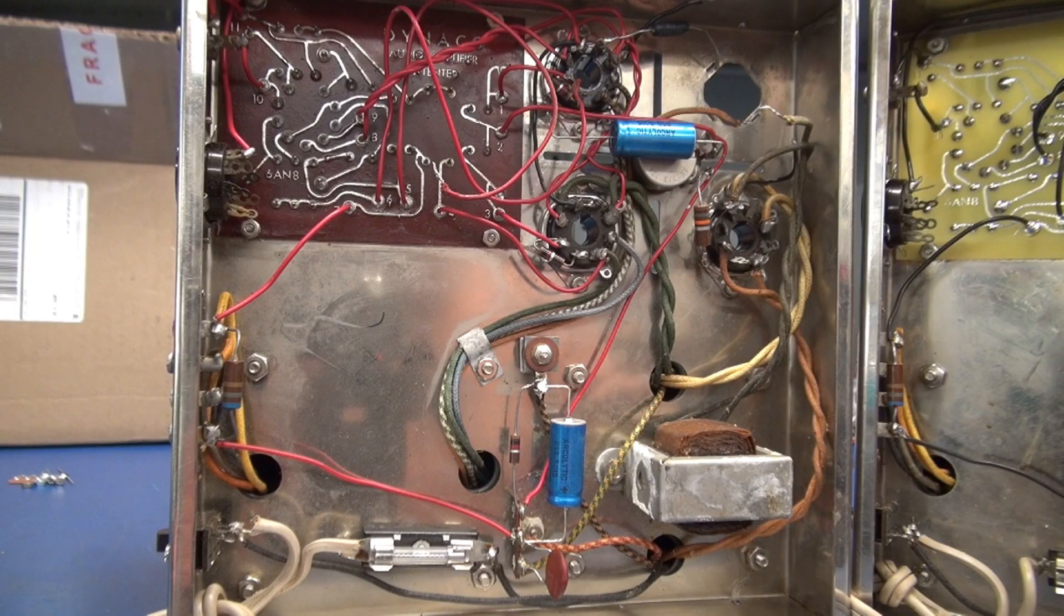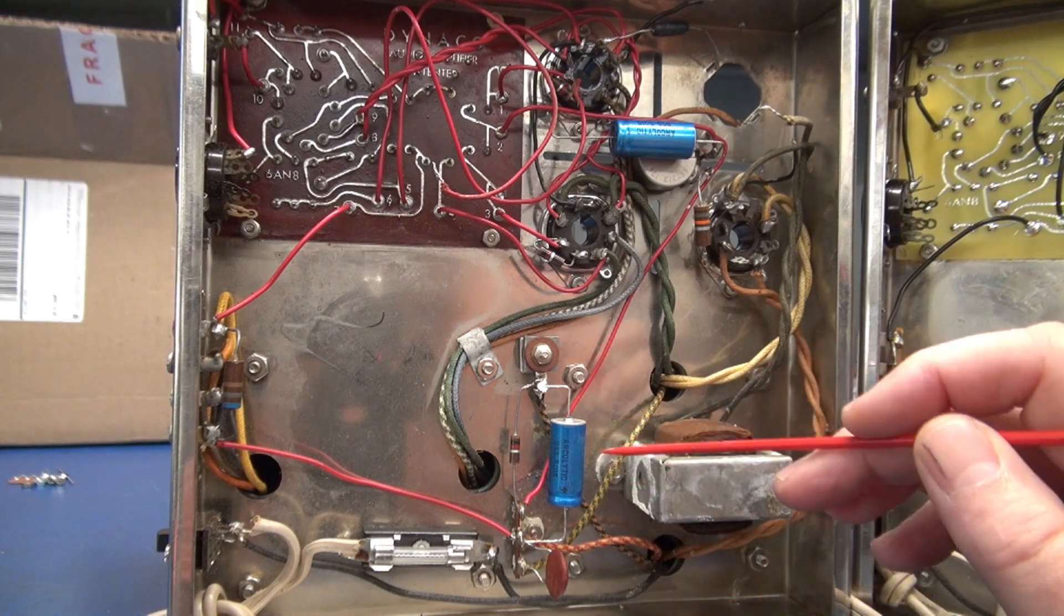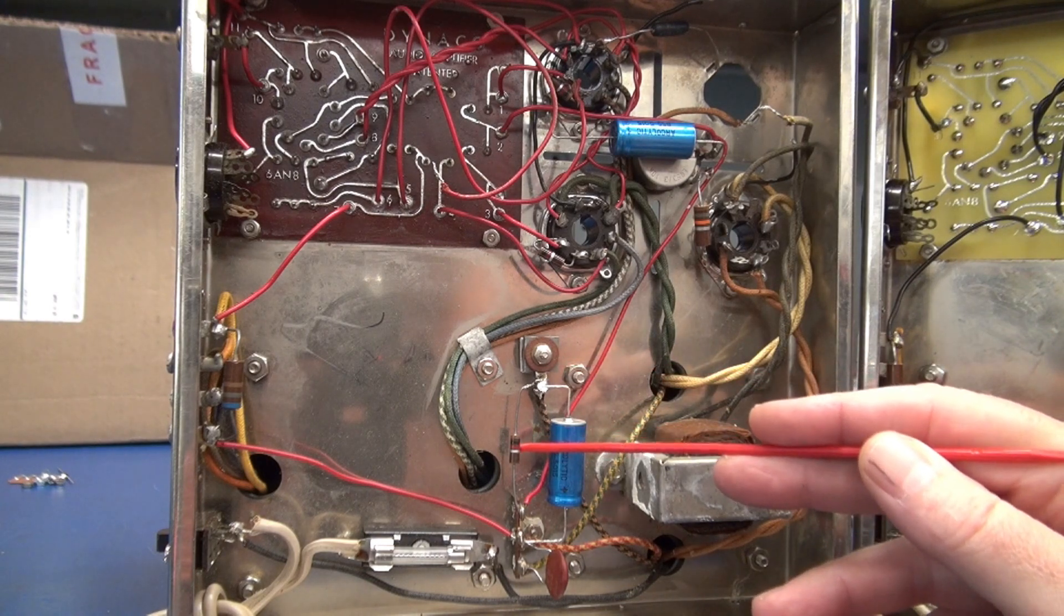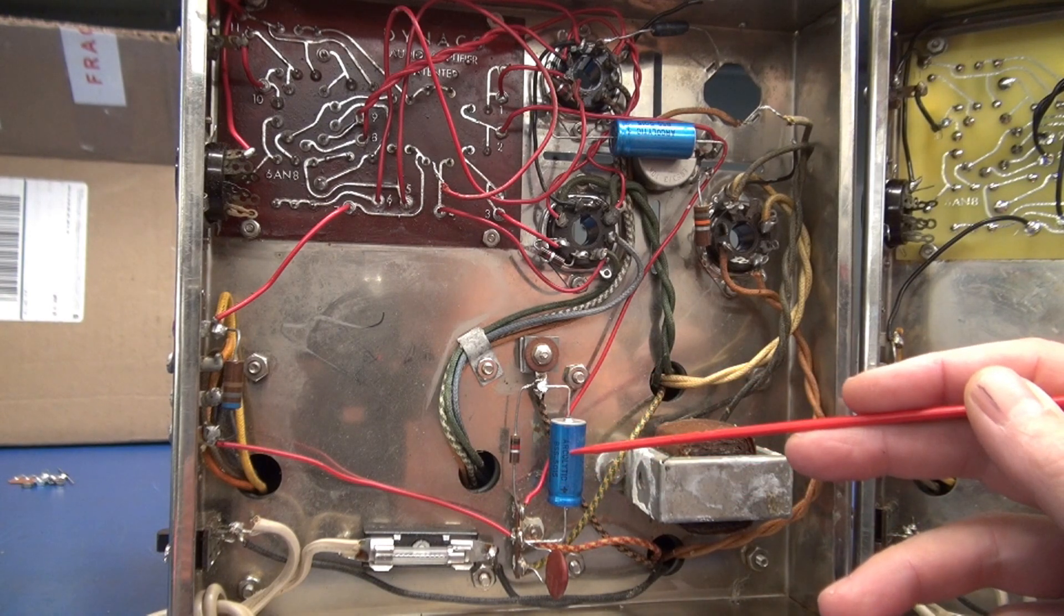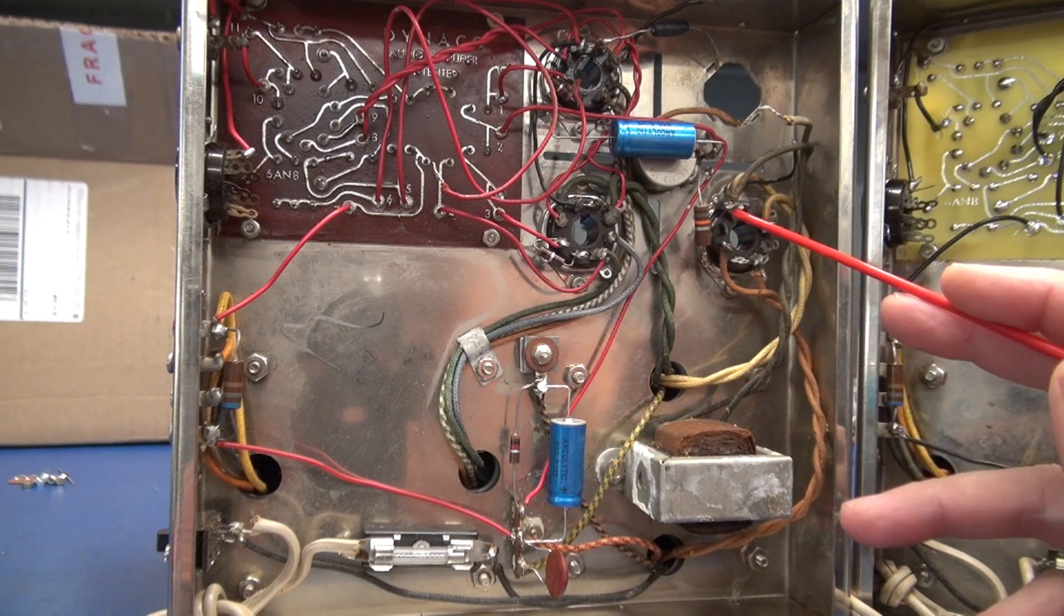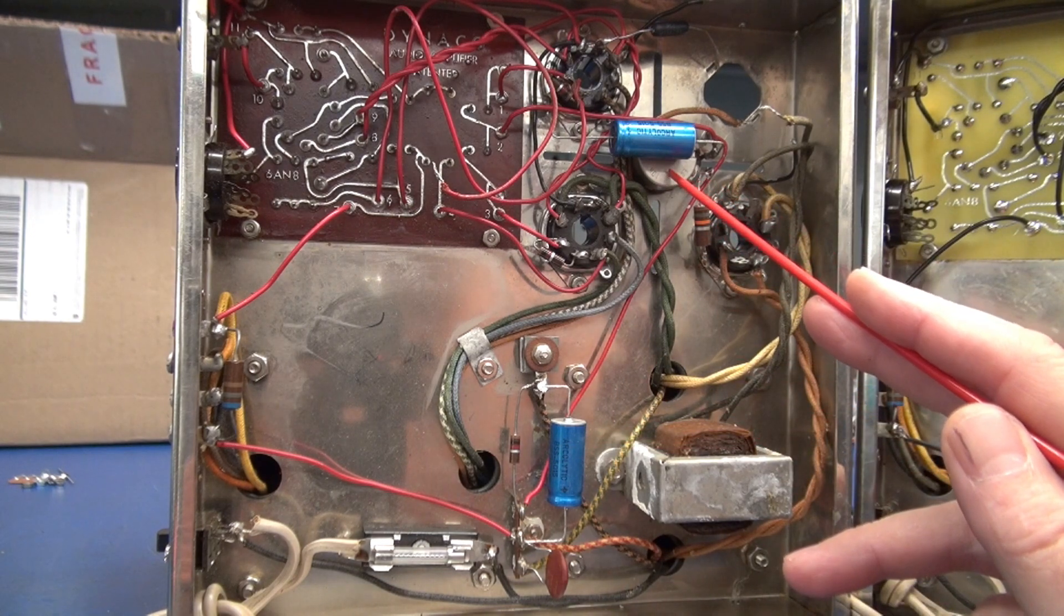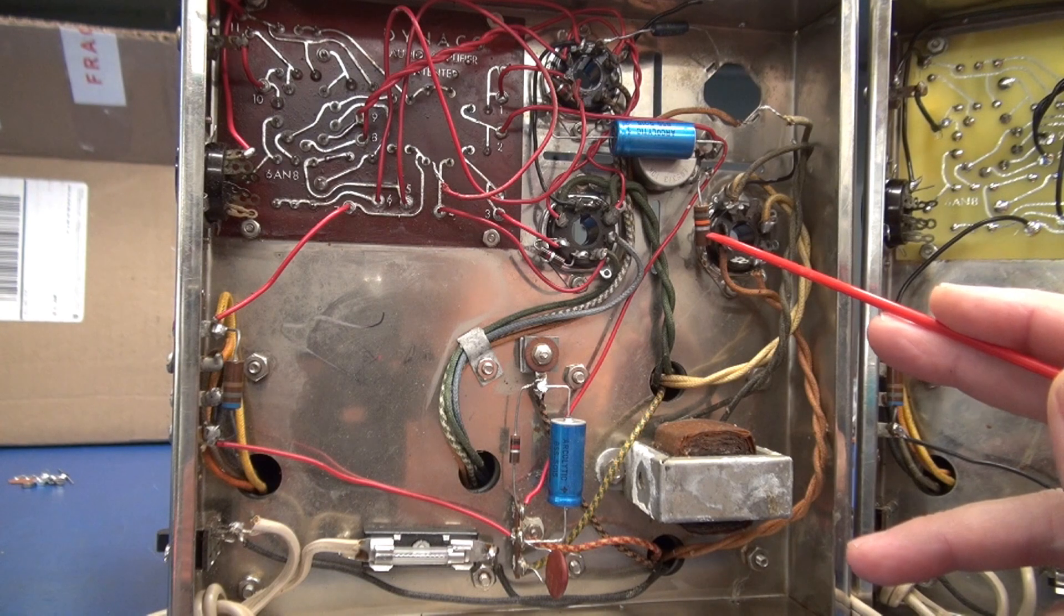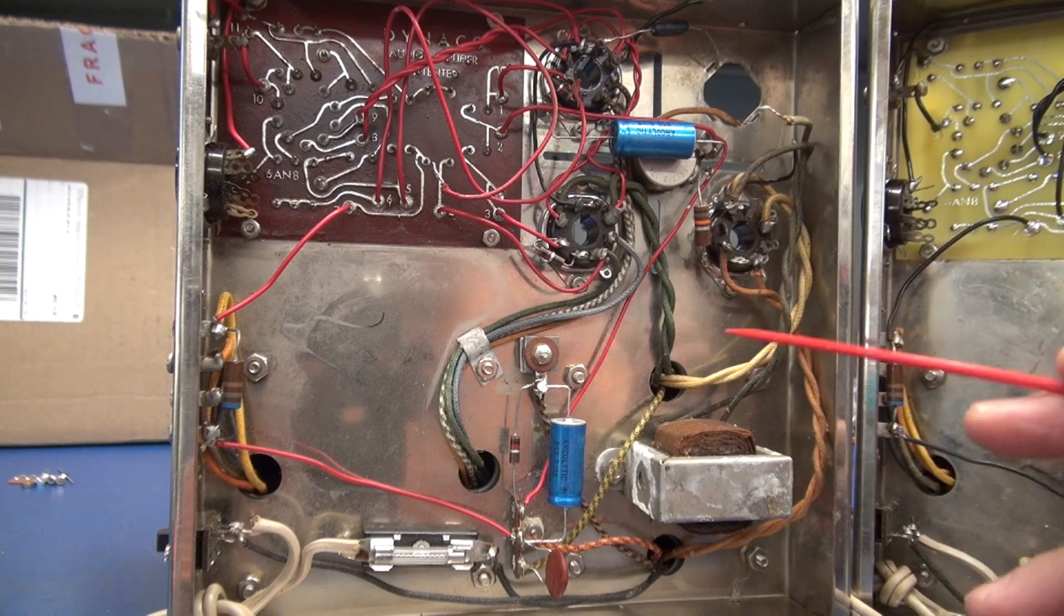So, let's start with an unmodified Dynaco Mark III. Here is the bias circuit. You have your selenium rectifier. There's a 1,000 ohm resistor. And this is the first negative bias cap. And then if you look up here, you've got your bias adjust pot with another cap and an 18K resistor going to ground stock configuration.